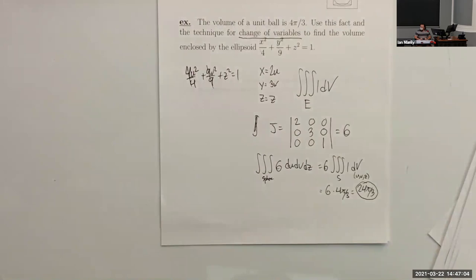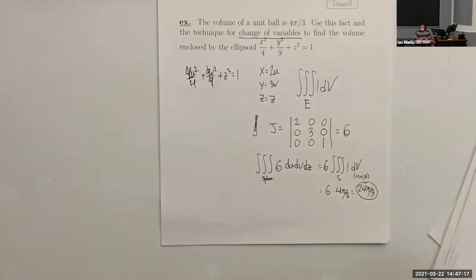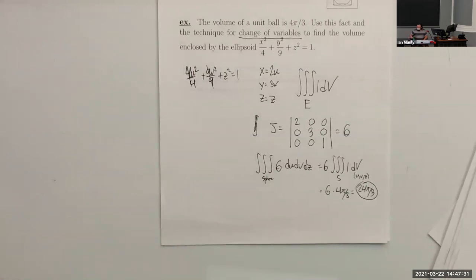We chose x = 2u and y = 3v because squaring gives x²/4 = u² and y²/9 = v², eliminating those denominators. Whether a bound is constant or a variable function depends on the coordinate system and the shapes involved — spheres give constant bounds in spherical coordinates, but cylinders generally don't. No class Wednesday; Friday we begin the last chapter of the course.